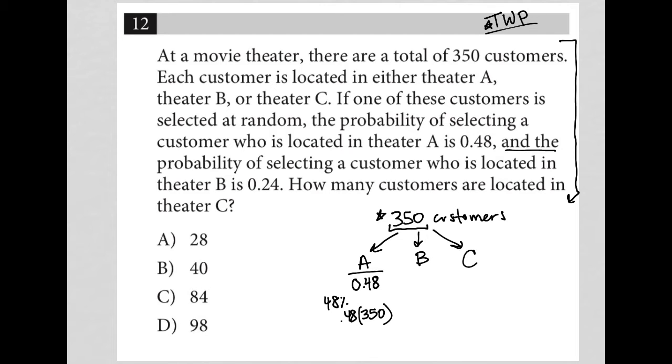It goes on to say, and the probability of selecting a customer who is located in theater B is 0.24. So the same exact concept. That means 24% of our customers are in theater B. And again, if I wanted to know exactly what that number of customers was in that theater, I can multiply 0.24 by 350.